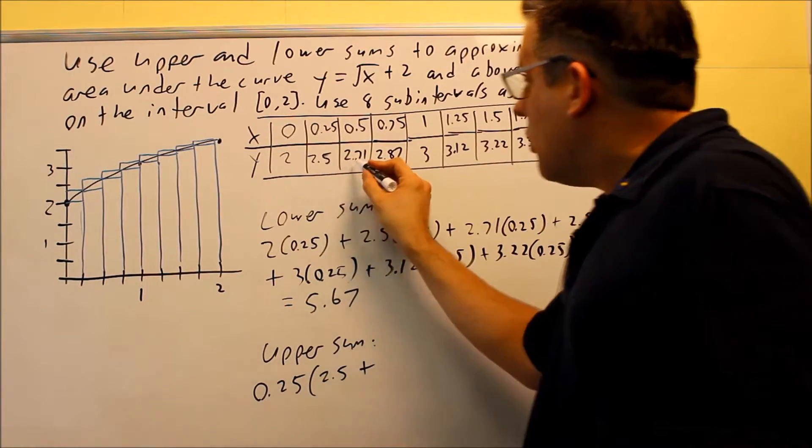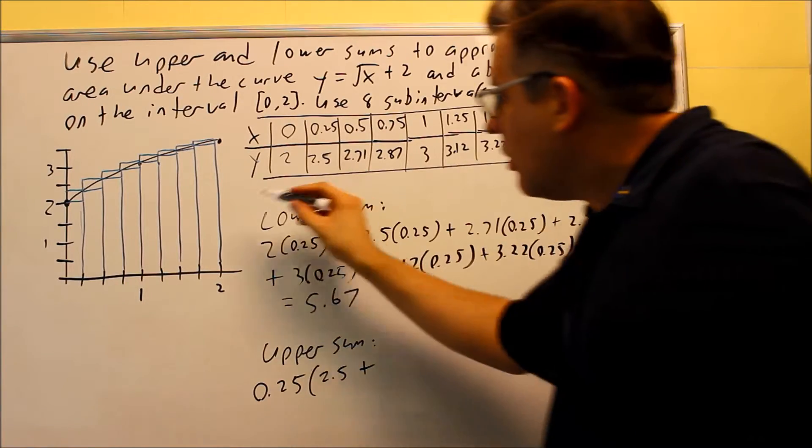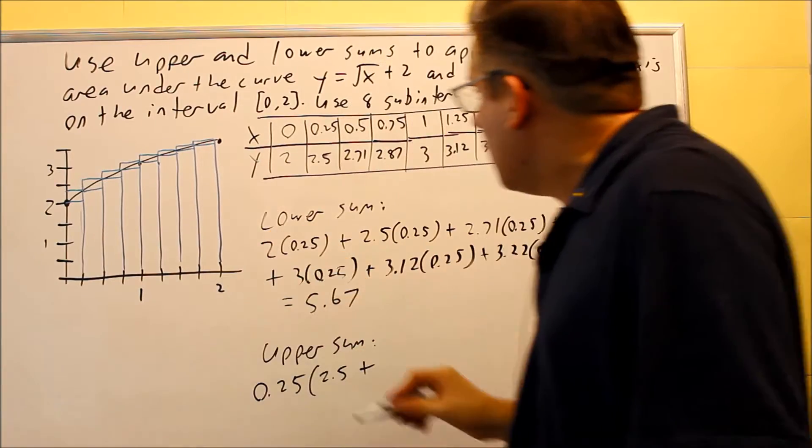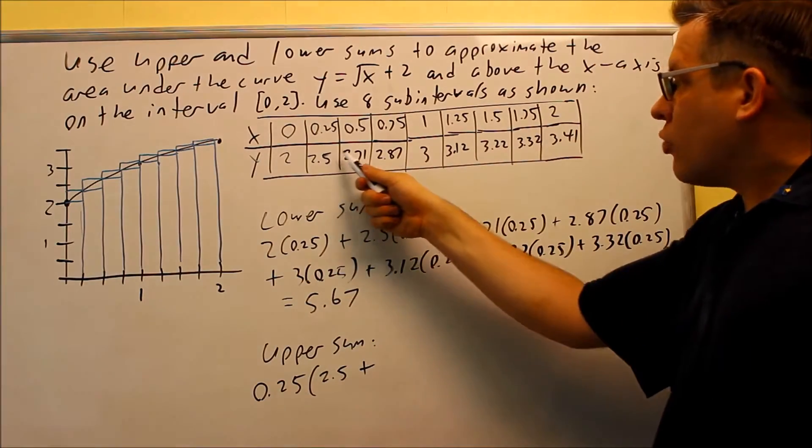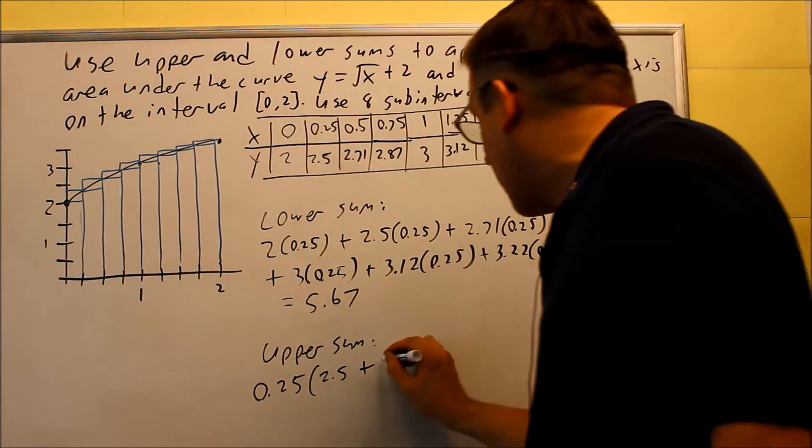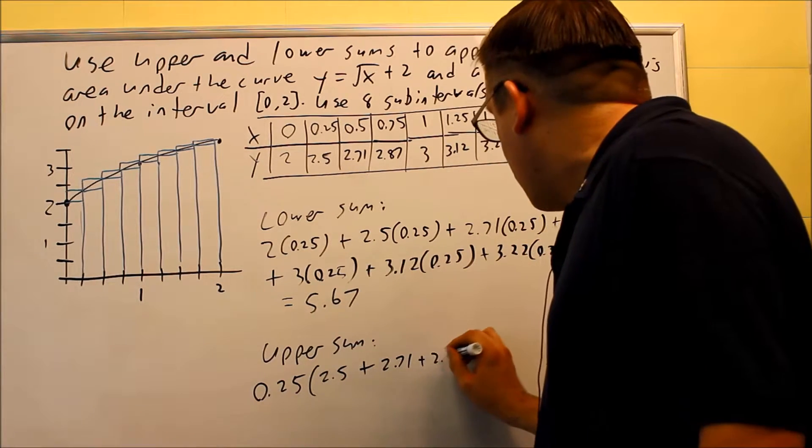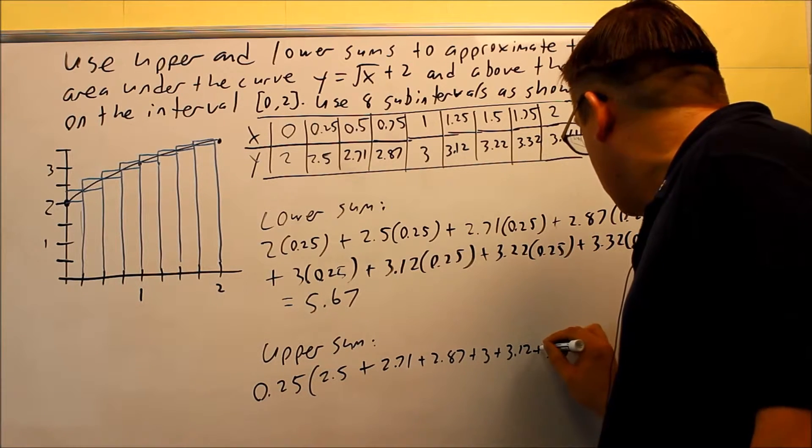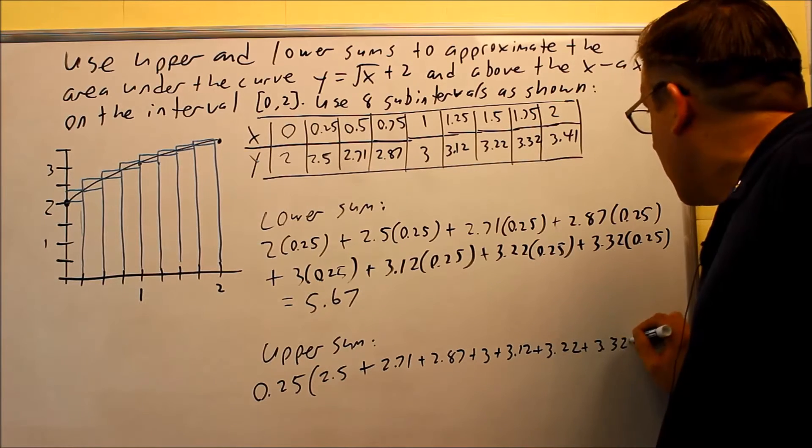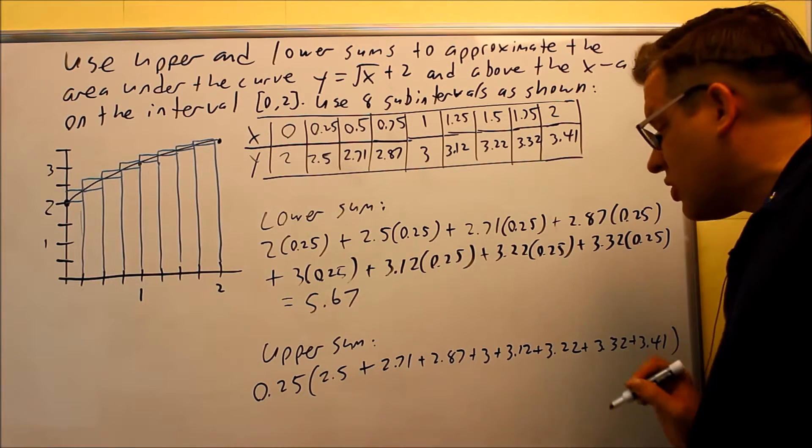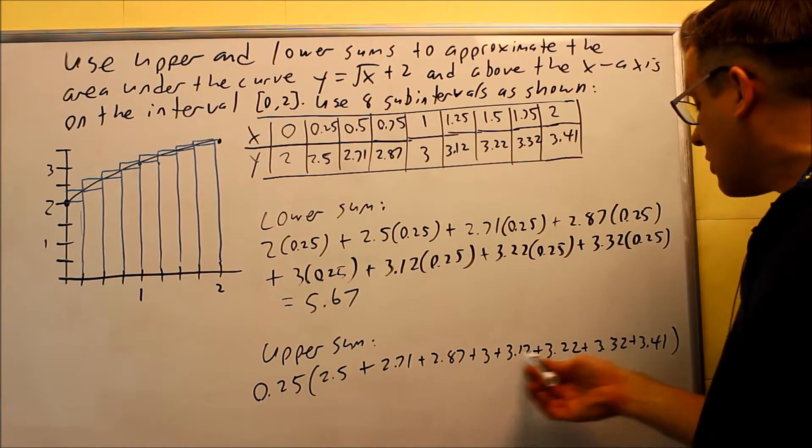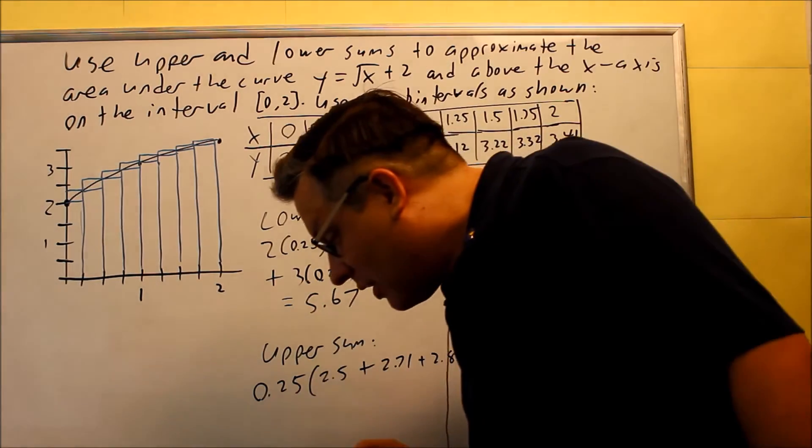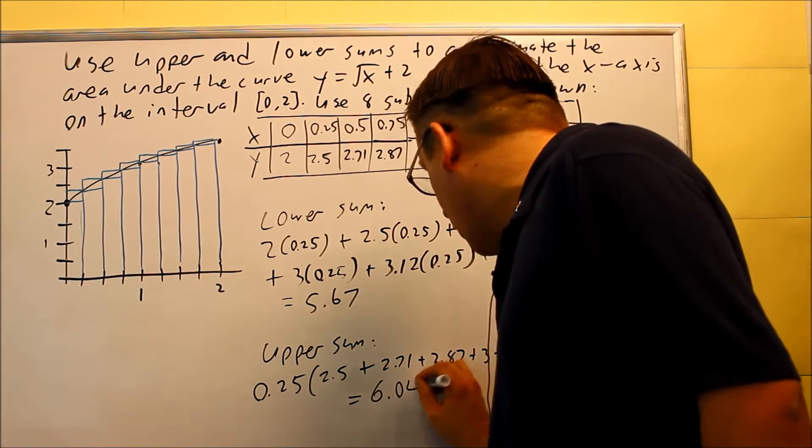Then next, I'm basically just going to be using all these other heights all the way down. And I notice that the very last rectangle is using the height at 2. So therefore, all I'm going to do is just write all these numbers inside here: 2.5, 2.71, 2.87, 3, 3.12, 3.22, 3.32, and then 3.41 I'm going to use here. So 0.25 times all this on the inside. If you multiply all that out together, then you're going to get your answer is 6.04.